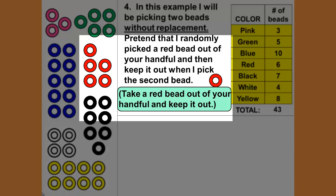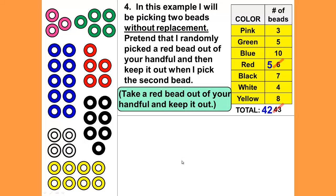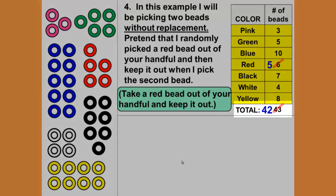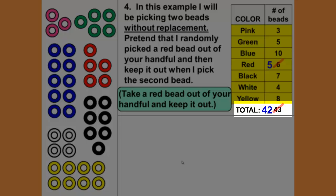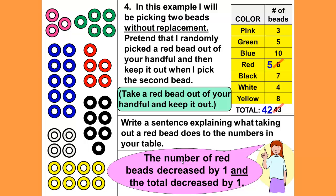She picked up a red bead and moved it, and it is now out of your sample space there on the left. We now have how many red beads? We no longer have six red beads—we have five red beads—and our total also decreases by one to a total of 42. Write a sentence explaining what taking out a red bead does to the numbers in your table. Well, the number of red beads decreased by one and the total decreased by one.